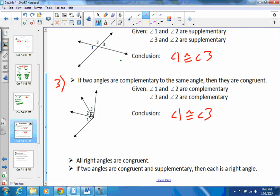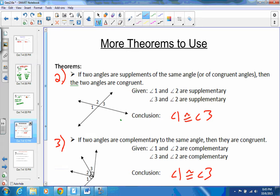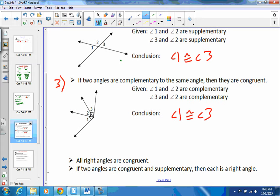All right, I've got two more down here. And there's no picture or given or conclusion. It just says all right angles are congruent. Hopefully you kind of understand that one by now. They're all going to be equal to 90 degrees, so they're all congruent. And then if two angles are congruent and supplementary, then each is a right angle. That's our fifth one. So we've got five different theorems now, five different theorems that we can use and that we will use. And these are all dealing with angles.